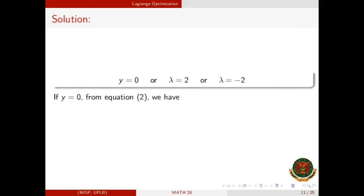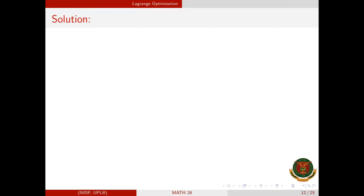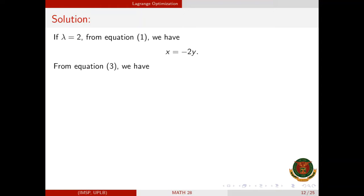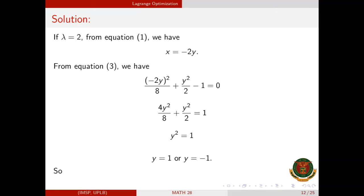For the first case, if y = 0, then from equation 2, x = 0, which contradicts equation 3. Hence y ≠ 0. For the second case, if λ = 2, then from equation 1, x = −2y. Substituting into equation 3: (−2y)²/8 + y²/2 − 1 = 0, which simplifies to 4y²/8 + y²/2 = 1, giving y² = 1, so y = 1 or y = −1. Since x = −2y, then x = −2 or x = 2.